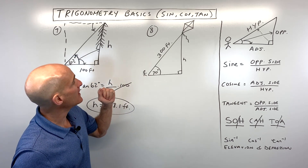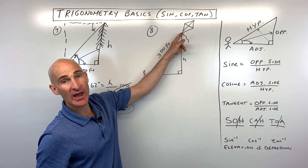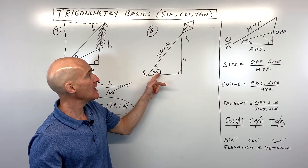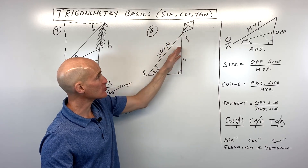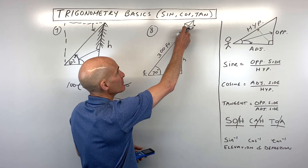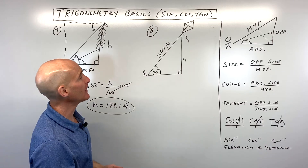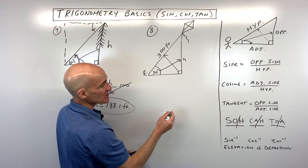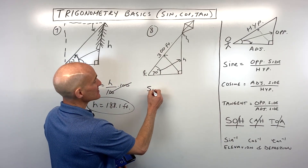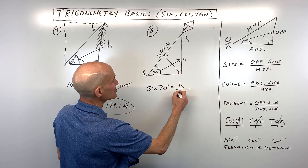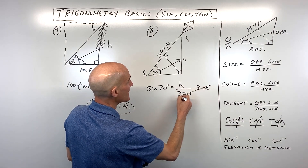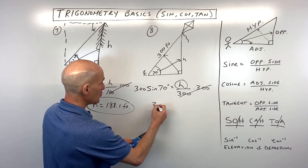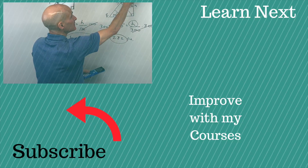For number eight, we're flying a kite on a 300-foot roll of string. We measure the angle of elevation at 70 degrees and want to know how high the kite is above the ground. The height h is the opposite side and the 300-foot string is the hypotenuse — opposite and hypotenuse, that's SOH, or sine. So the sine of 70 degrees equals h over 300. Multiply both sides by 300: 300 times the sine of 70 degrees comes out to about 282 feet above the ground.